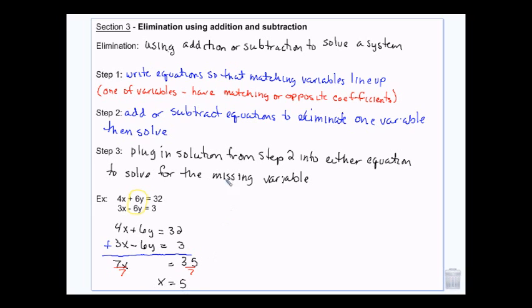Now that I know what X equals, I can take this X and I can plug it into either of these and find out what Y equals. So I have 4 times 5 plus 6 times Y equals 32. So that's 20 plus 6Y equals 32. Let's subtract 20.